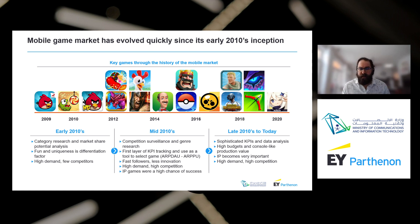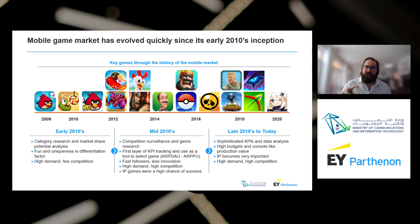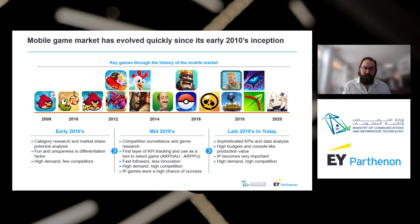Intellectual properties became very important — you start seeing games based on movies and TV shows, like many Marvel and Star Wars games. IP is important because it allows you to market your game better and acquire users at a lower cost per acquisition. Both demand and competition are very high at this time as well.